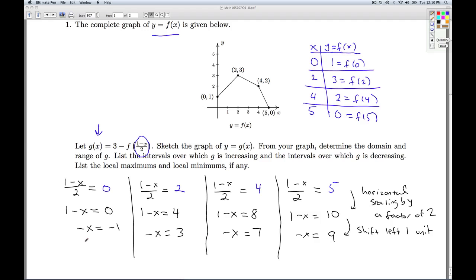And the last step, I would multiply both sides by negative 1. So I get x equals 1, x equals negative 3, x equals negative 7, x equals negative 9. And multiplying an x-coordinate by negative 1 is a reflection across the y-axis. So as far as the horizontal is concerned, I've done these three transformations.